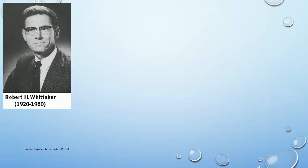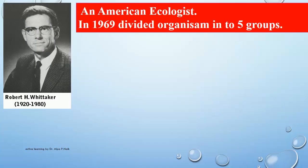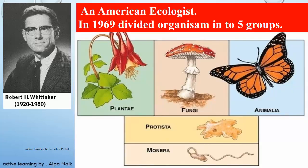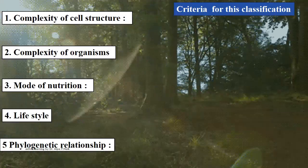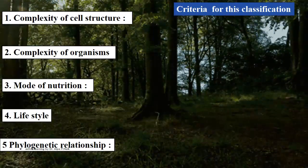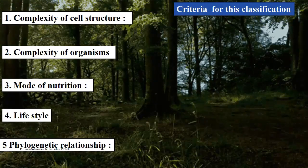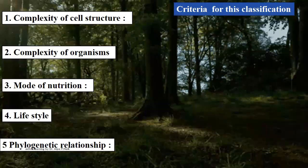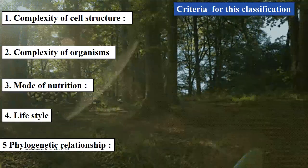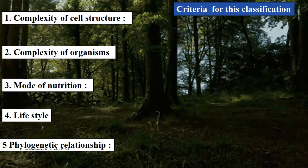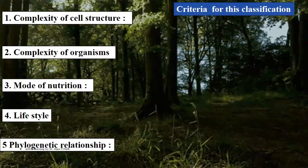Robert H. Whittaker, an American ecologist, in 1969 divided organisms into 5 groups: plant, fungi, animalia, protista, and monera. To make this division he adopted certain criteria: complexity of cell structure — that is, whether they are eukaryotic or prokaryotic; complexity of organism — unicellular or multicellular; mode of nutrition; lifestyle; and phylogenetic relationship.